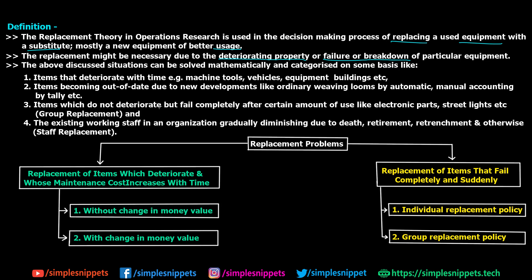Type three is items which do not deteriorate but fail completely. Some machines come with a known lifespan or expiry date, but you cannot always predict when a machine, software, or asset will fail — electronic parts can fail at any time. Type four relates to staff replacement: the existing working staff in an organization gradually diminishes due to death, retirement, attrition, or job changes.